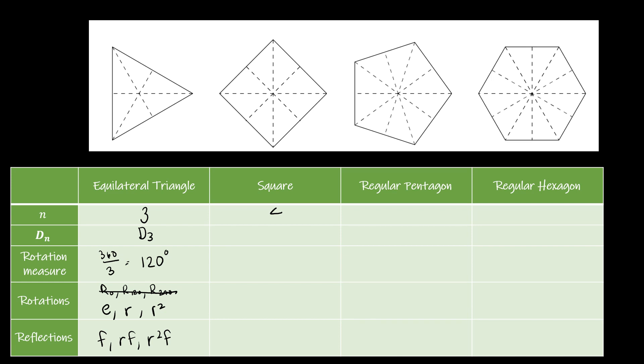So a square is the one that we just did. That was D4. Rotation measure was 360 divided by four, which is 90. Rotations: E, R, R squared, R cubed. And then reflections: F, RF, R squared F, R cubed F.